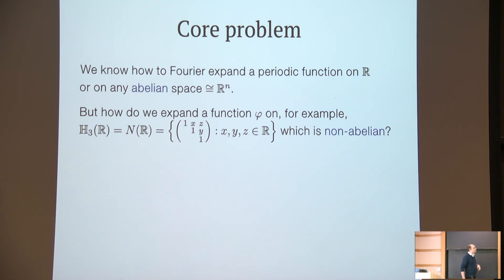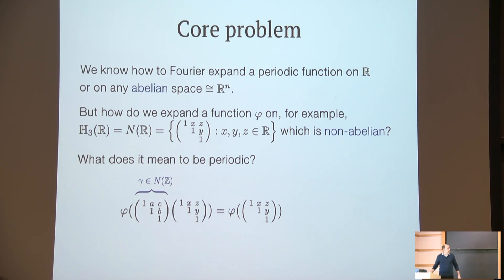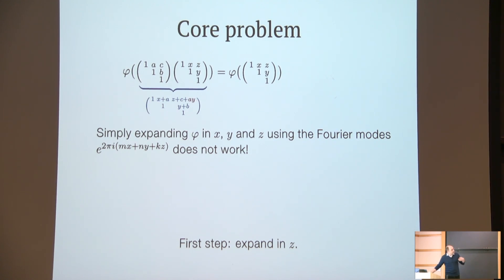The Heisenberg group, which we denote by N here, are the three by three upper triangular matrices, and this is non-abelian. But first, what does it mean to be periodic on this group? We say phi is periodic if it's invariant under left translations of these integer matrices gamma here. Let's call the argument G. We note that the non-commutativity appears in the upper right corner in the center. Simply expanding phi in x, y, and z using these Fourier modes does not work because these Fourier modes are invariant under integer shifts in x, y, and z, but phi is not.